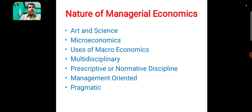Natures of managerial economics. Managerial economics has seven natures. The first one is art and science. The second one is microeconomics. The third one is use of macroeconomics. The fourth one is multidisciplinary. The fifth one is prescriptive or normative discipline. The sixth one is management-oriented. The seventh one is pragmatic.